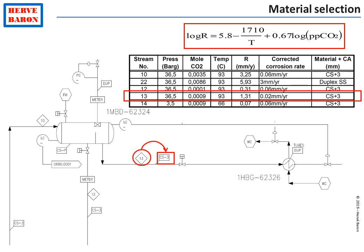The required input data for this calculation are shown on the heat and mass balance, which indicates for each stream the temperature, pressure, and composition. The corrosion rate is then calculated over the entire facility's design life — such as 20 or 30 years — by multiplying the yearly corrosion rate by 20 or 30. If the resulting wall thickness loss over the facility's life is less than 6 mm, ordinary carbon steel can be selected with a corrosion allowance of up to 6 mm.